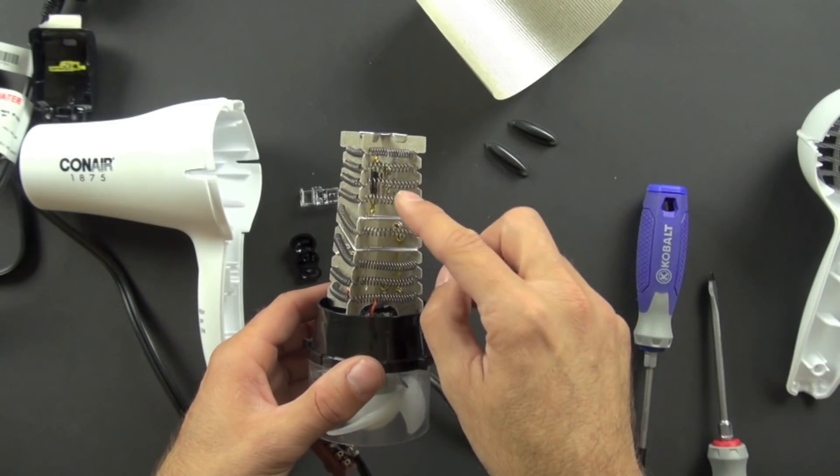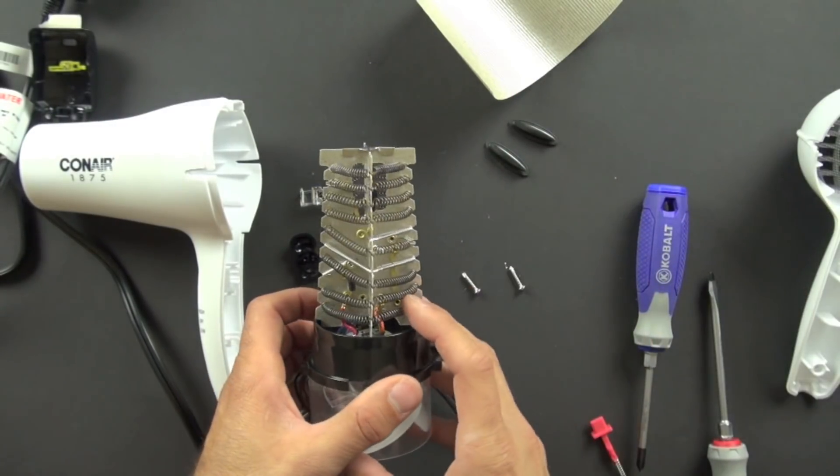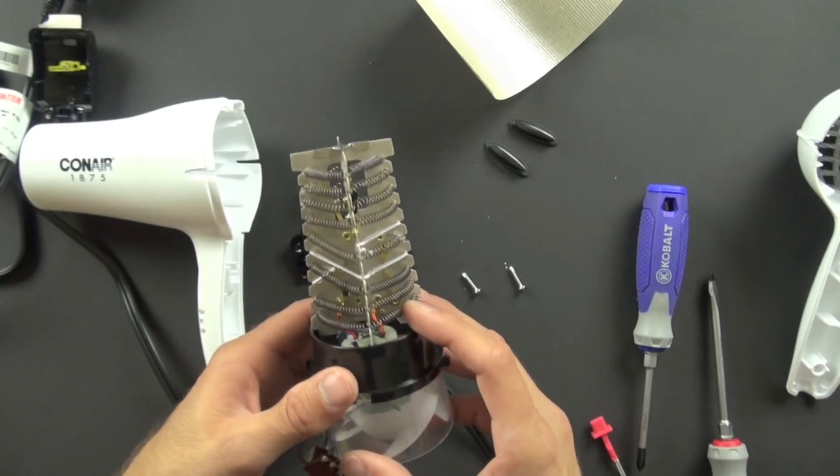So if it gets too hot, the bimetallic strip will expand and it will pull itself away from the contact and shut down the electricity to the heater.